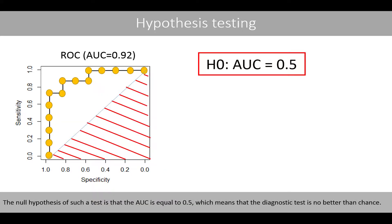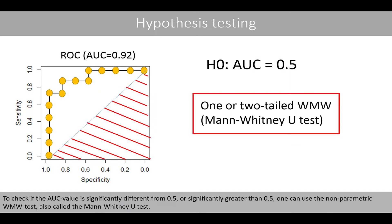The null hypothesis for this test is that the area under the curve equals 0.5, meaning the diagnostic test is no better than chance. To check if the AUC is significantly greater than 0.5, one can use the nonparametric Wilcoxon Mann-Whitney test, also called the Mann-Whitney U test.